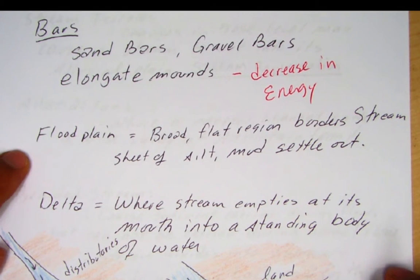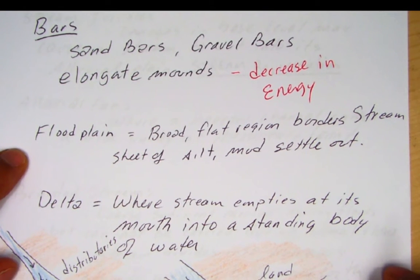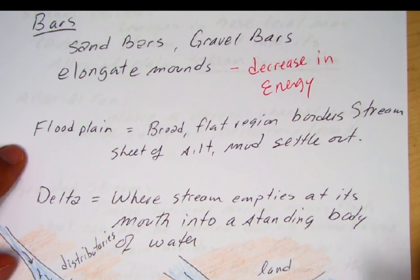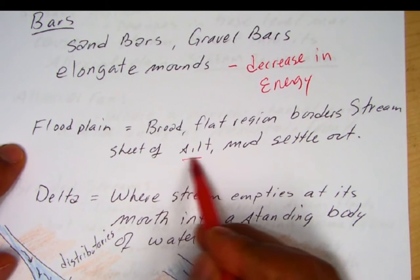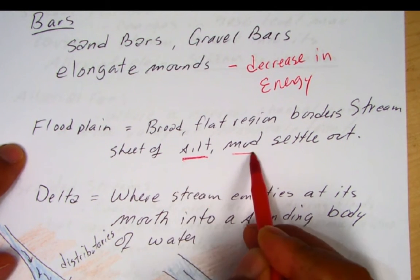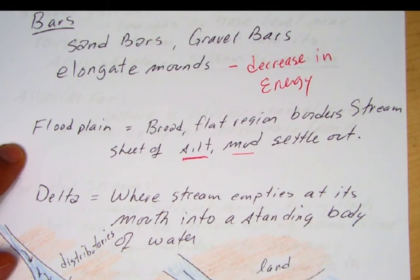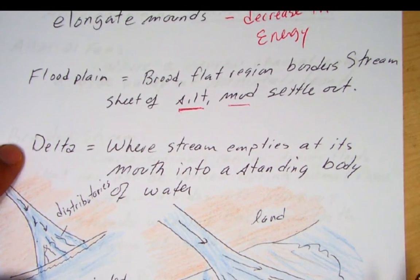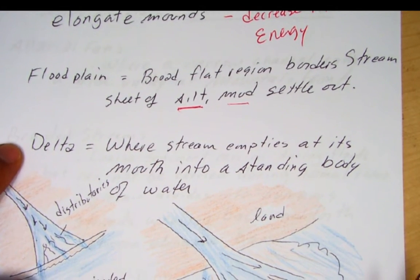Usually we'll see floodplains — broad flat regions that border the stream. So when there is flooding, that's where the finer silt and mud will settle out. That's what brings nutrients to these floodplain valleys.